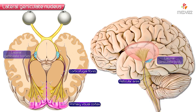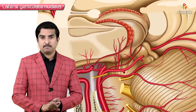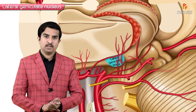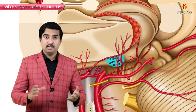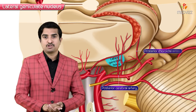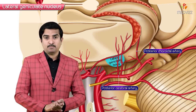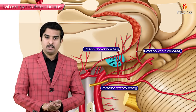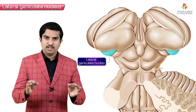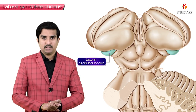The lateral geniculate body is both a relay station and a gating mechanism for all visual information coming from rods and cones to the primary visual cortex. Its blood supply is mainly from the posterior cerebral and posterior choroidal arteries, with additional contribution from the anterior choroidal artery.